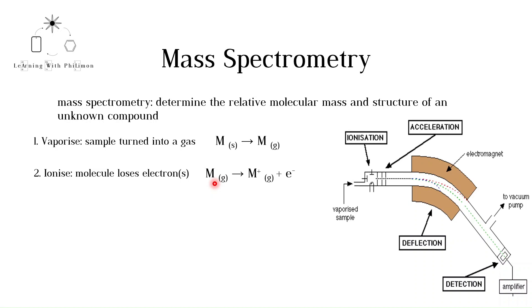As can be seen in the equation, the molecule is now a positive ion. Note that more than one electron may be removed. So the ion could have a positive charge larger than 1+.